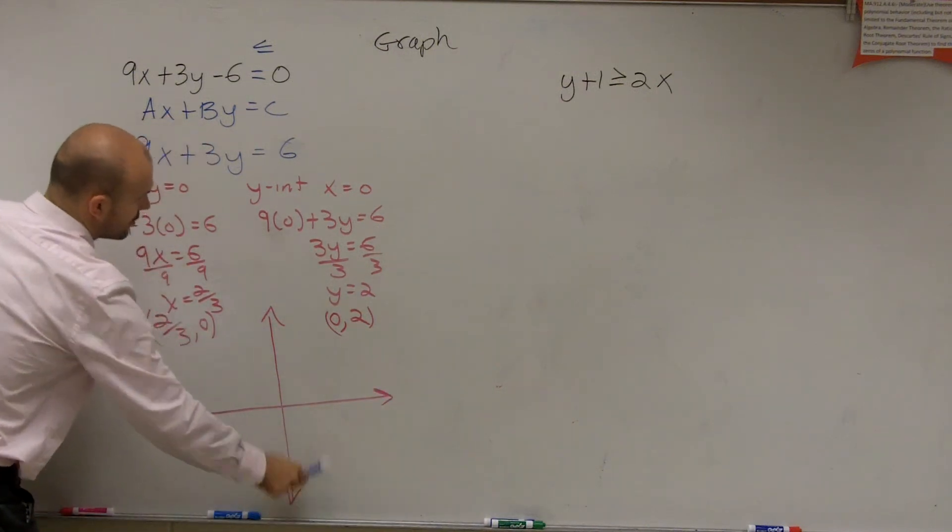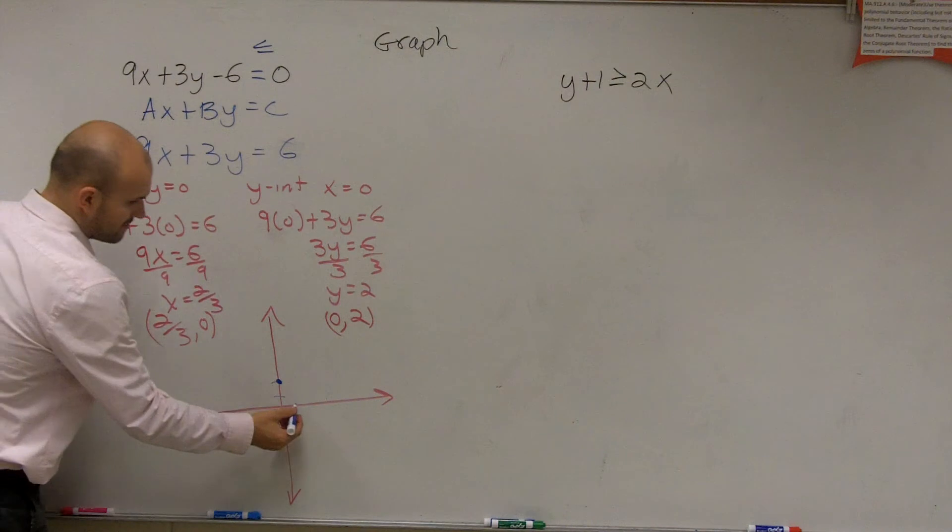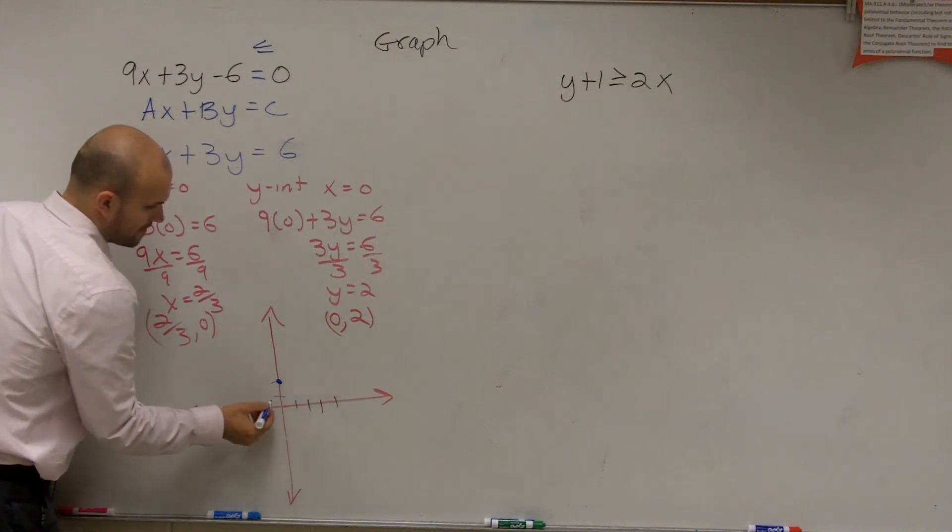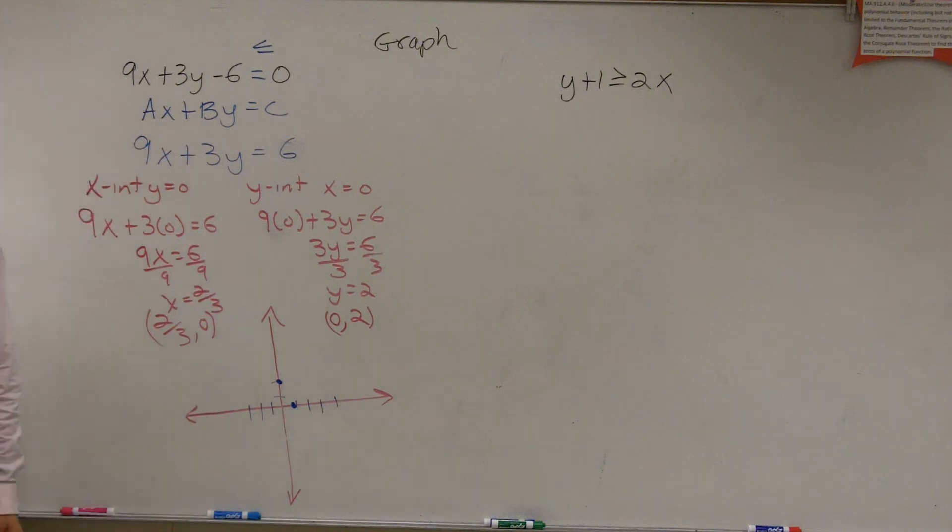All right? 0, 2 is right up here, 1, 2. 2 thirds, 1 is going to be 2 thirds of the way to 1. So it's going to be about right there. All right?